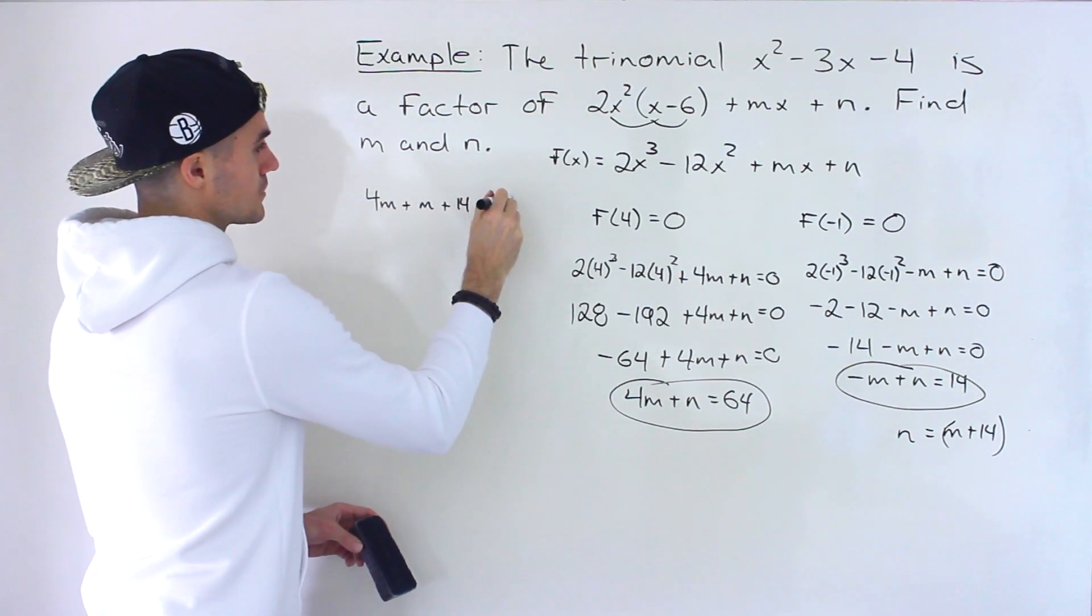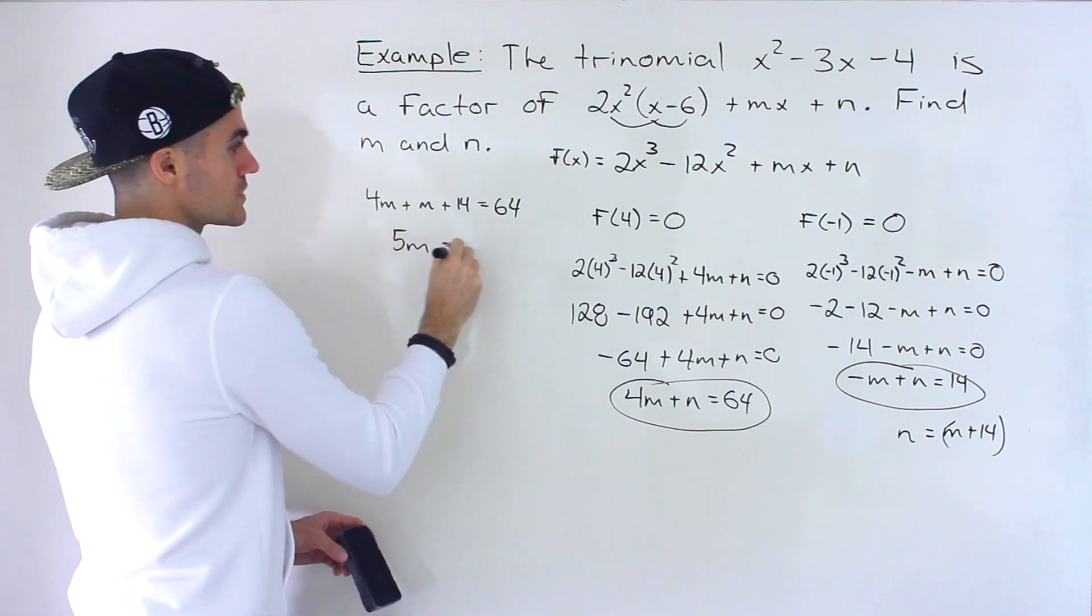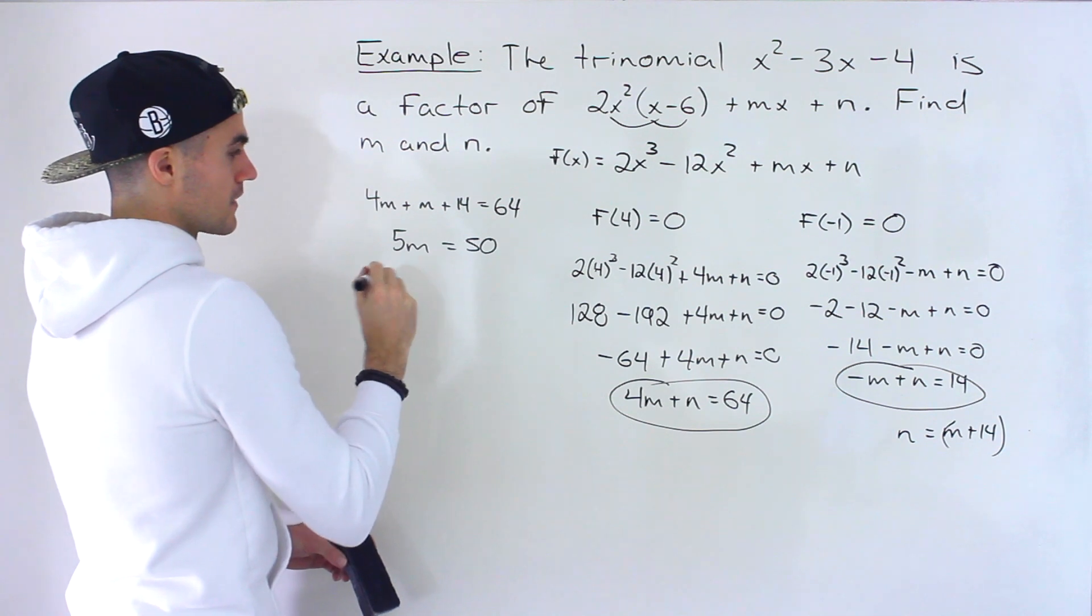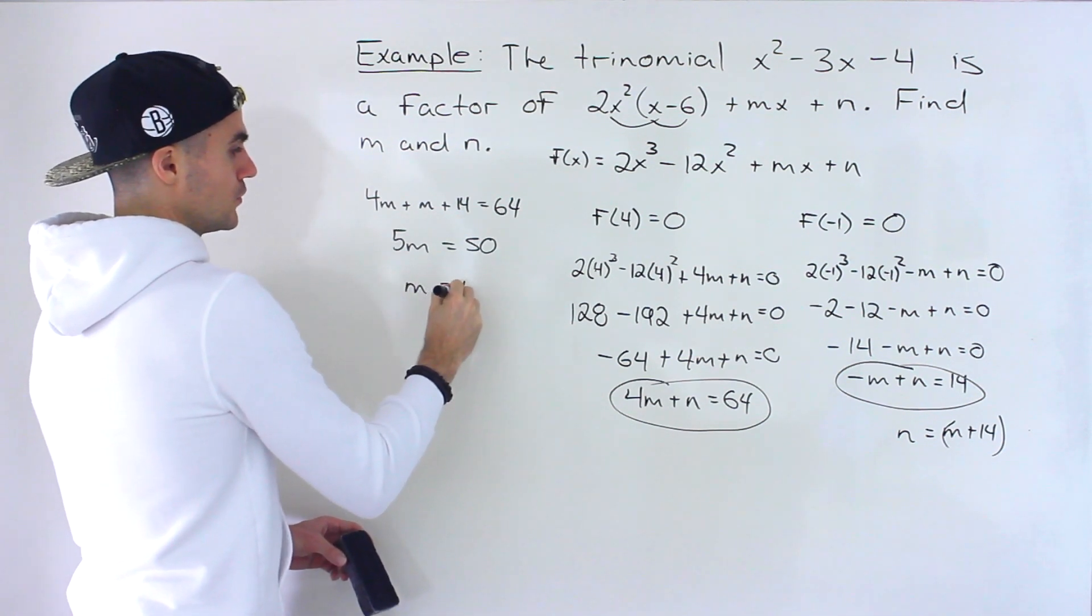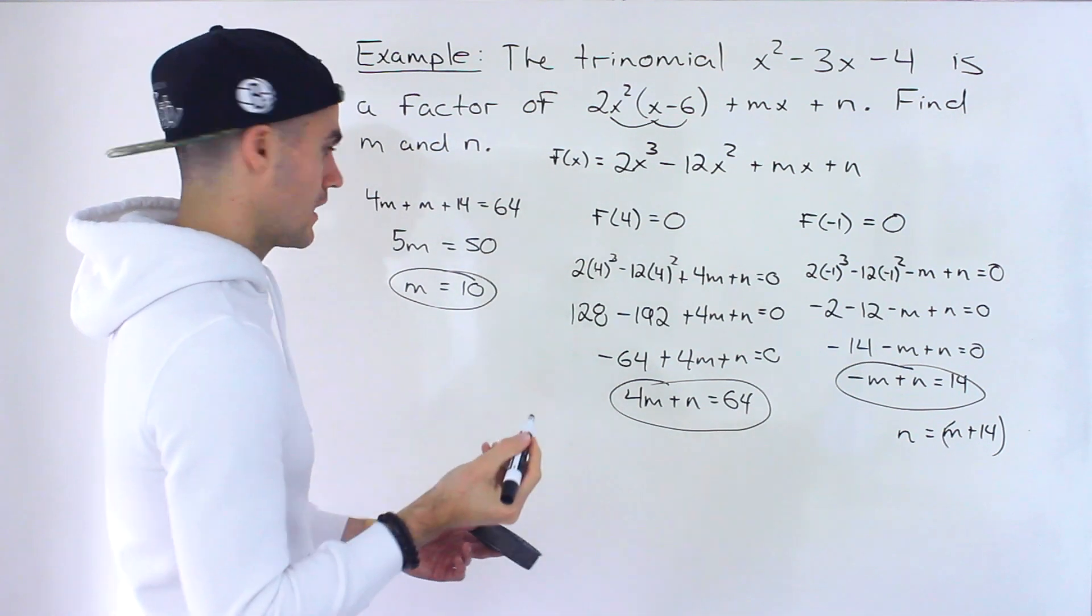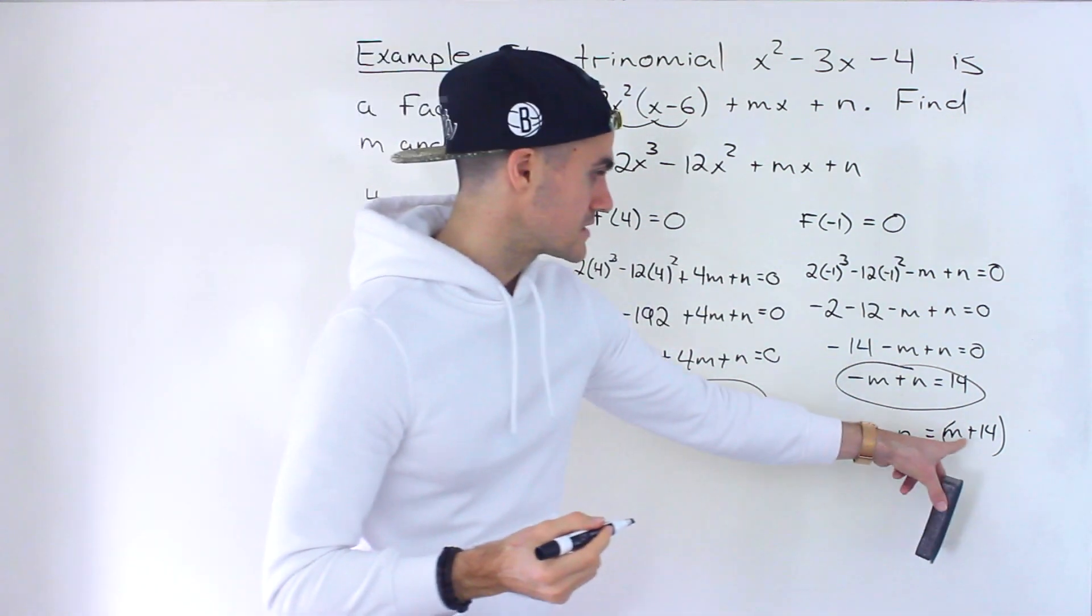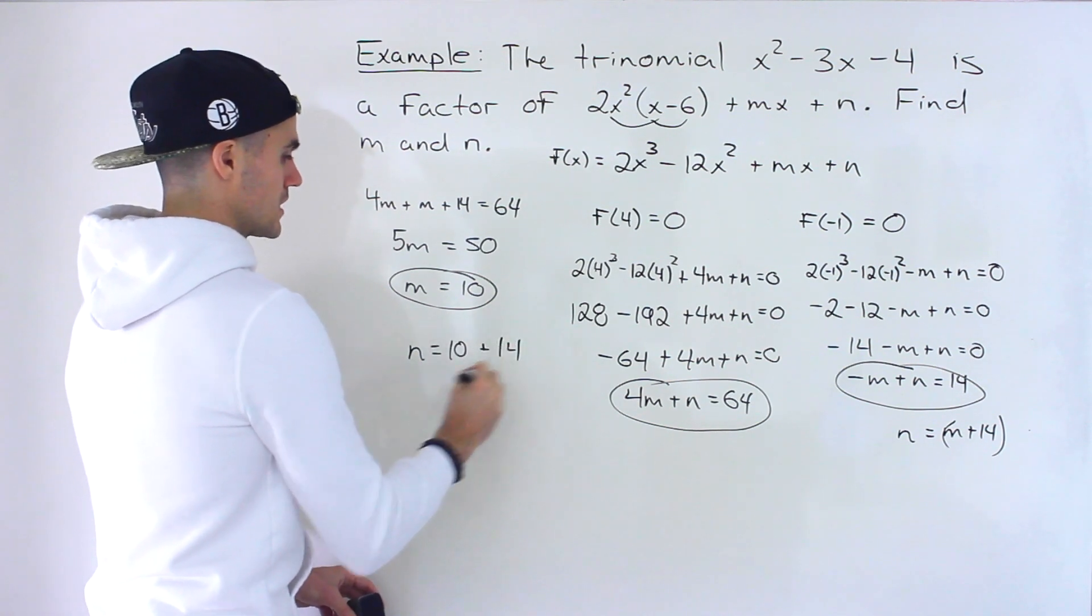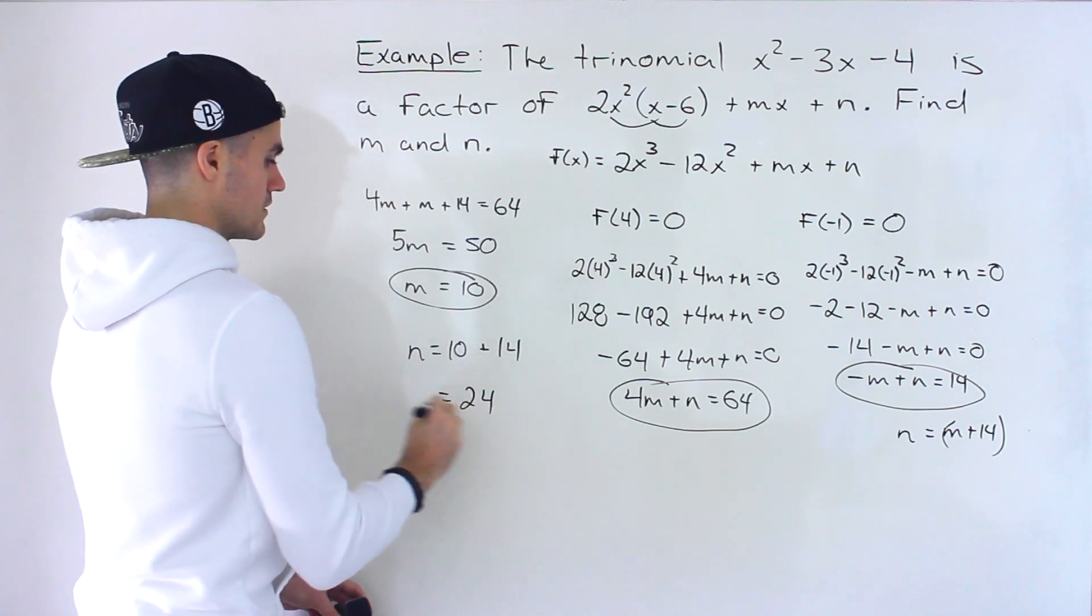This would be 5m. Bring the 14 over 64 minus 14 gives us 50. m would be 10. And then m is 10. I feel like it's easiest to plug in there. So n would equal 10 plus 14 which would give us 24.